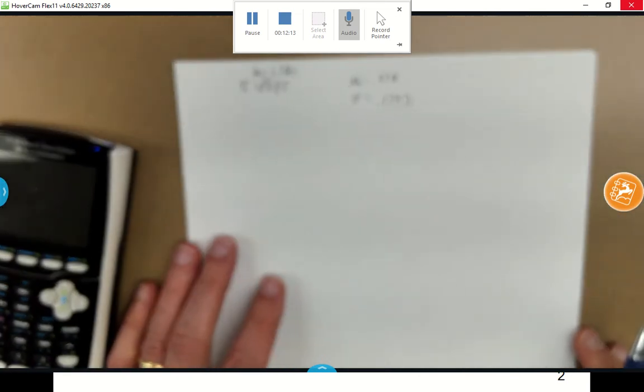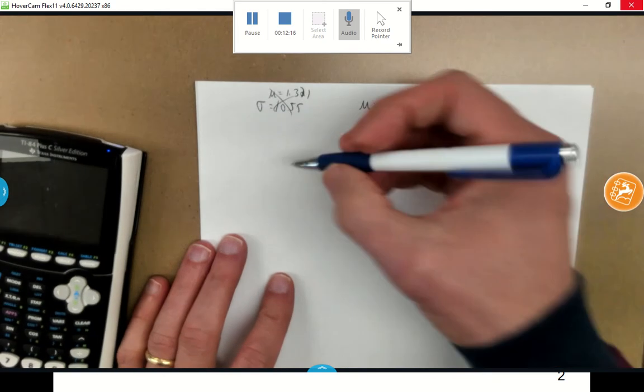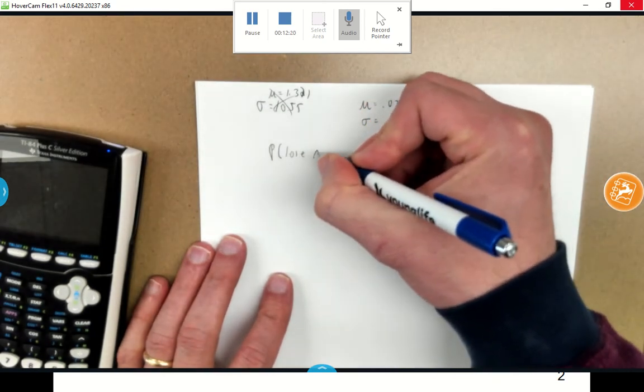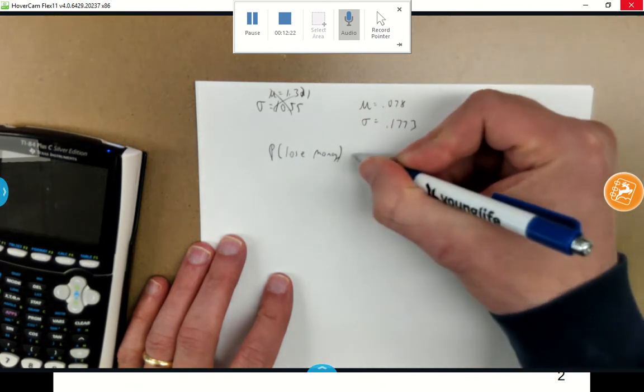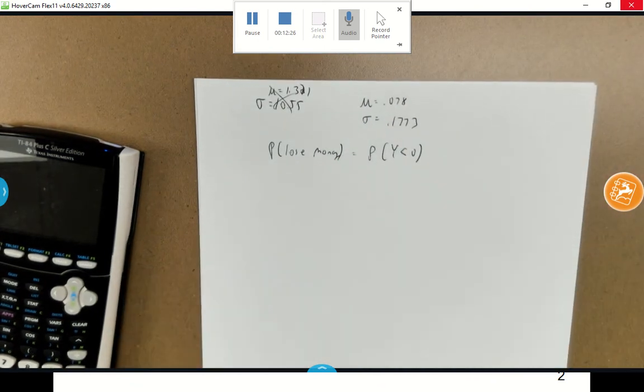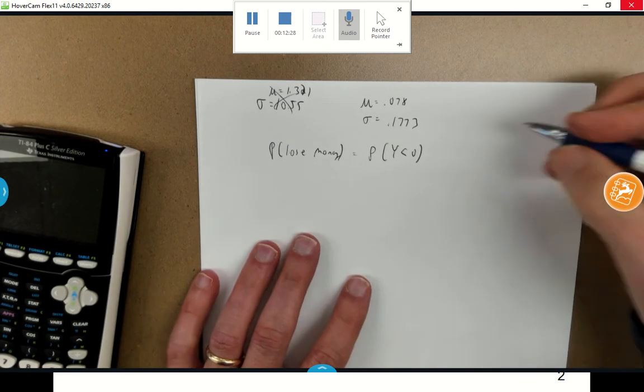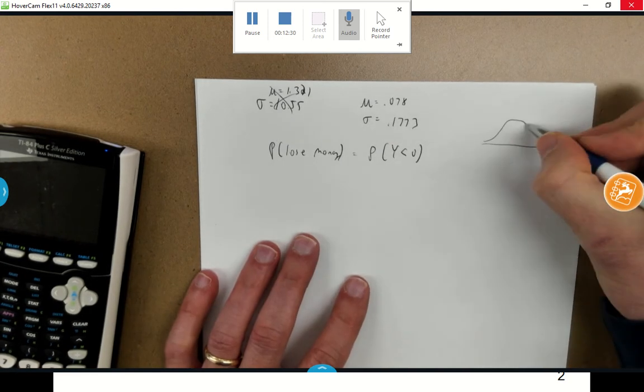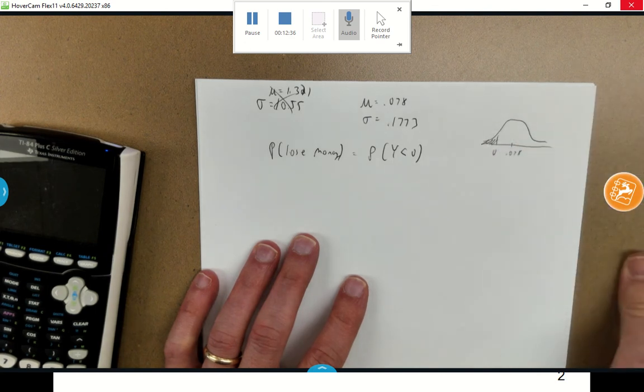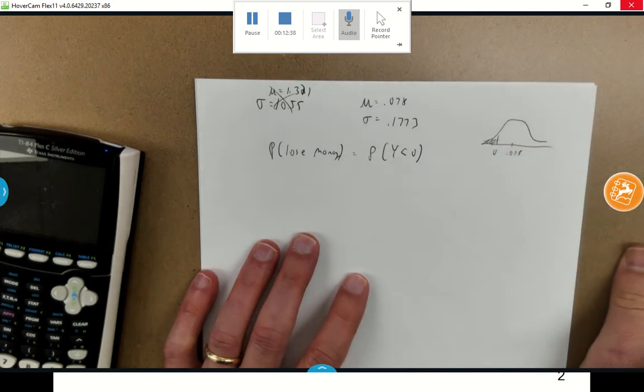With this now in my portfolio, I can then ask the question, what's the probability I am going to lose money? That is, what's the probability that my portfolio is going to be less than zero? If you think about it, here's my mean of 0.78, here's zero. I want to find the probability that I will get something less than that.